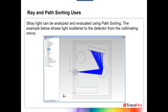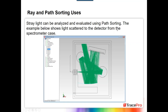This is stray light — unwanted scattered light. Using path sorting, here we can see light scattered to the detector from the spectrometer case. Depending on the type of finish on the case — painted black or anodized black — we can look at the contribution of light from scattering off the case. The path here is fairly complex: light comes in, hits the focusing mirror, hits the grating, hits the collimating mirror, reflects off the window in front of the detector, comes back, hits the mirror, hits the case, and then goes back through. Without the path sort filter or path sort table, it would be difficult to figure out where this light is coming from and how to mitigate it.